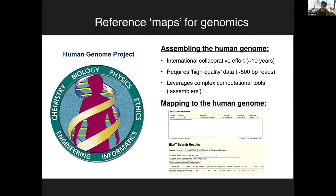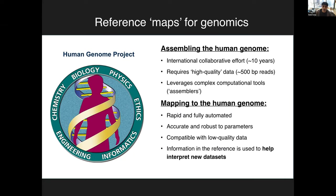But once that reference map has been built, the process of mapping new data to it can be remarkably fast and easy. Many of you have used the BLAT tool on UCSC — you type in your sequence, hit map, and get results in milliseconds. Mapping to the human genome is almost instantaneous, fully automated, and you can do millions of reads per minute. It's accurate and robust, with default parameters that work great even for 20–30 base pair reads, because there's so much information already encoded in the reference.